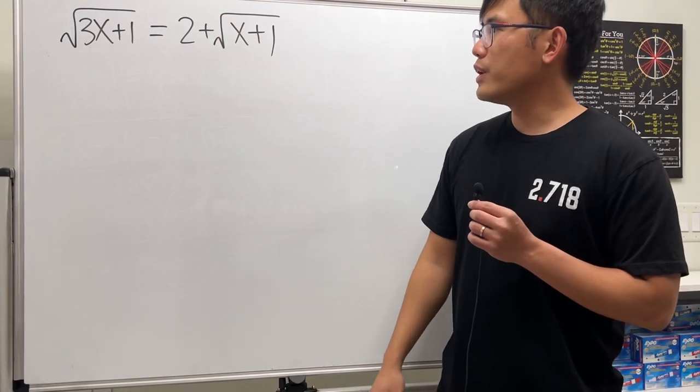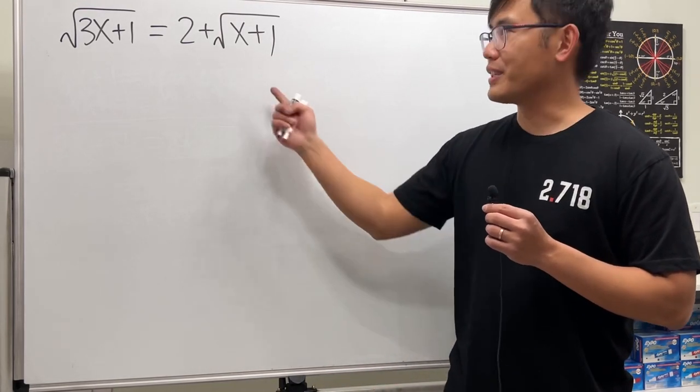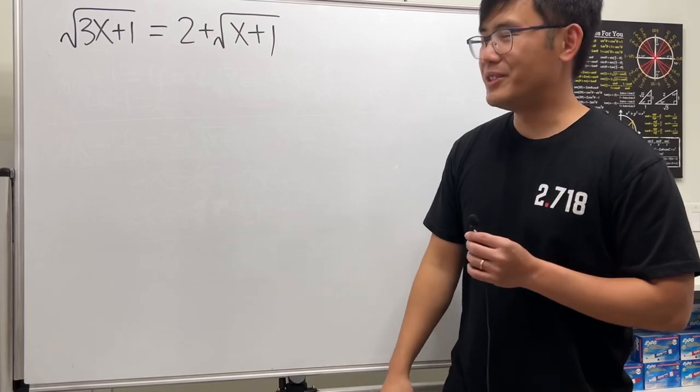So how do we solve an equation with two square roots, just like this one here? Don't worry, let me show you.